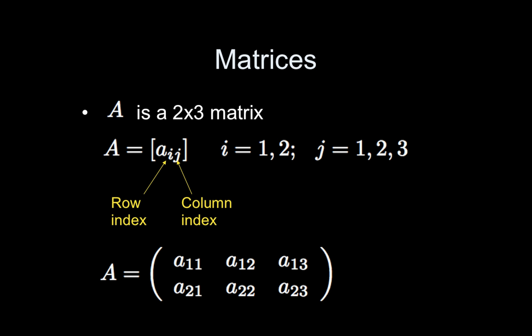So there are different ways of expressing matrices. You can say things like A is a two by three matrix, which simply means your matrix has two rows and three columns.